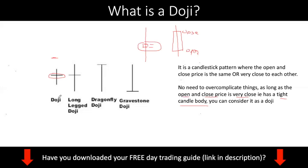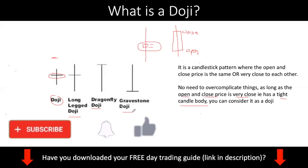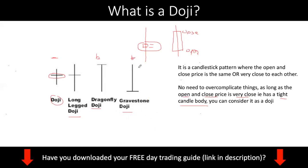So you have the classic doji, and you have these three dojis which I will go into depth in a later part of this training video. You have the long-leg doji, the dragonfly doji, and the gravestone. Dragonfly and gravestone are actually the same — it's just that one is bullish and the other is bearish. This one is like a buy signal and this one is like a sell signal.